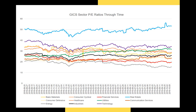What you're looking at right now are the GICS sector PE ratios through time. Each of these different lines represents a different sector of the economy — the financial services sector, the utility sector, the tech sector, real estate, etc. When we define sectors, there are 11 sectors of the U.S. economy. These are well-known sectors and this is the standard breakdown.